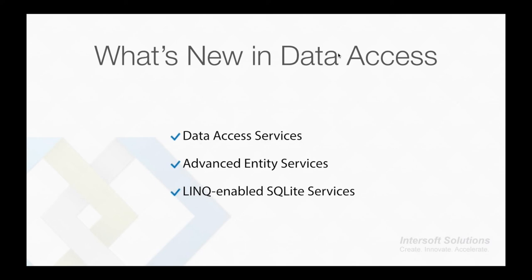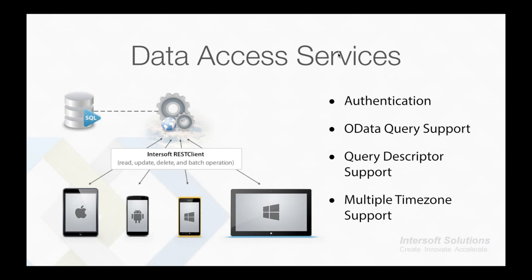Let's take a look at how Crosslight 2 has greatly simplified data access operations for mobile developers, starting from Data Access Services, Advanced Entity Services, and LINQ-enabled SQLite Services. Data access can be classified into two major categories: remote and local data access. Concerning remote data access, Crosslight 2 allows you to perform RESTful requests to a remote data server using the Intersoft REST client, which can be used from the view model, allowing streamlined data retrieval from all views sharing the same view model. The REST client supports read, update, delete, and batch operations. It also supports authentication that is fully compatible with OData query specifications, and comes with query descriptor support featuring multiple time zones.